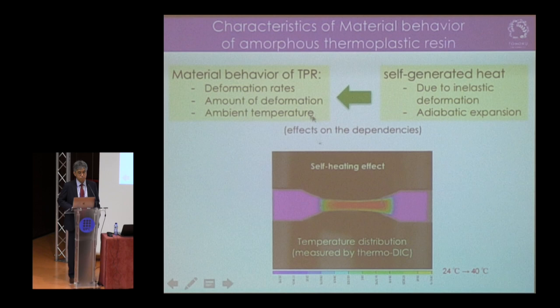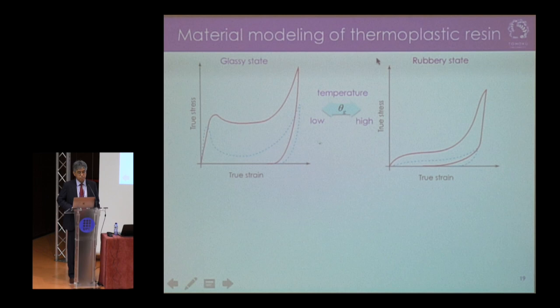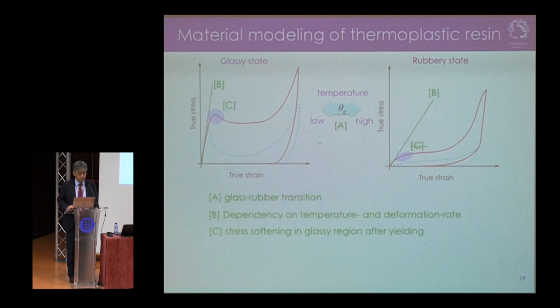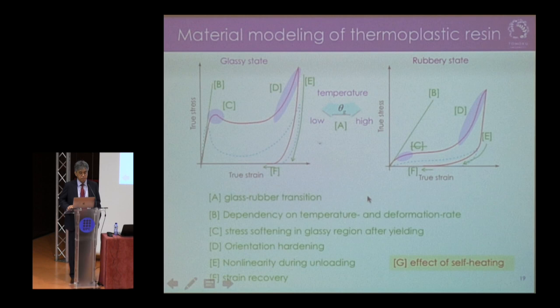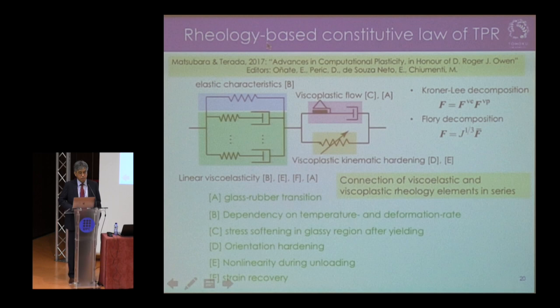At the same time, we must attend to the self-generated heat due to inelastic deformation and also the adiabatic expansion, because they have some effect on these dependencies. Our material model for the plastic regime should feature: glassy-rubbery transition, dependency on temperature and deformation rates, stress softening, orientation hardening in the glassy region after yielding, nonlinearity during unloading, strain recovery after complete unloading, and the effect of self-heating. We have recently developed a rheology-based constitutive model for the plastic regime, partially presented in a recent article.